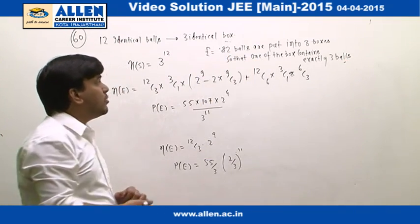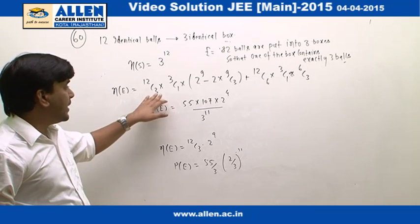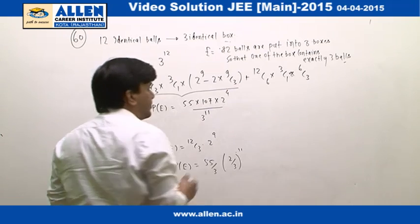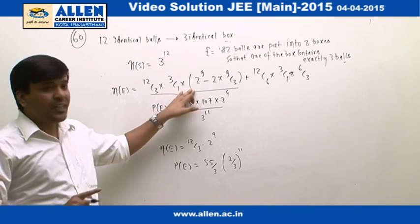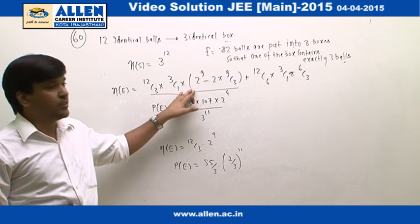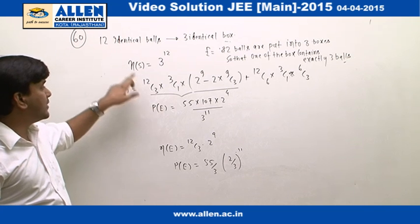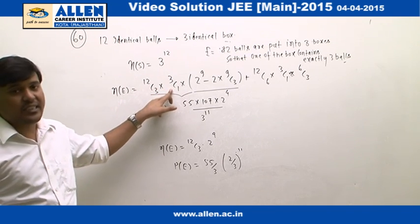12 balls are put into 3 boxes so that one of the boxes contains exactly 3 balls. Here we are calculating this into 2 parts. First part says we are putting the balls such that exactly one of the boxes contains 3 balls. So we can see we are selecting any 3 balls out of 12 balls, that is 12C3. Now, we are selecting a box, that is 3C1.